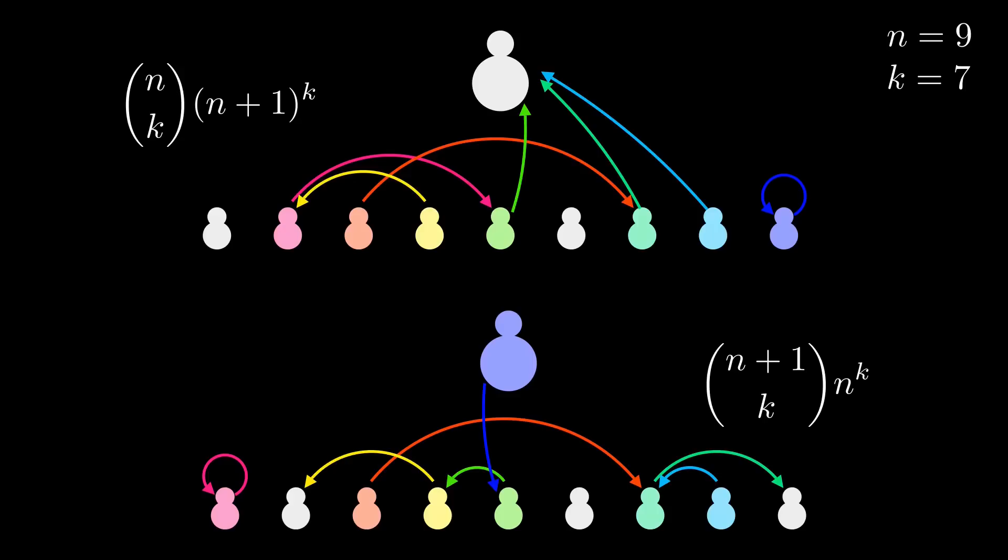The fights counted by the bottom set are similar, except we are allowed to give the adult one of the balloons, but no one is allowed to aim at the adult. Now we have to come up with an injection from the top set to the bottom set. Again, the difference between the two sides of the inequality is that in the fights of the smaller set, the adult can never be given a balloon, and in the larger set, the adult is never hit with a balloon.